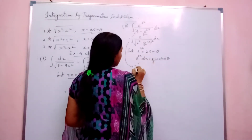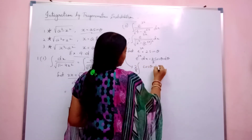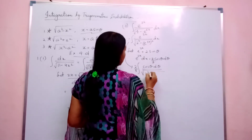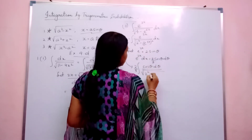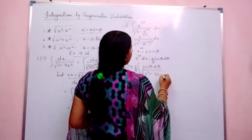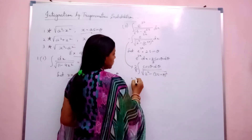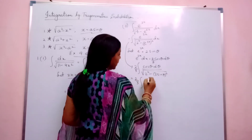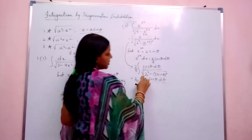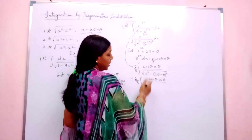Now your integration becomes: substitute e to the power 3x dx by the constant, take it outside in the numerator as cos theta d theta, divided by your denominator part — it is 2 squared minus e to the power 3x replaced by 2 sine theta whole squared. Now I can write it as 2 by 3, with cos theta d theta divided by 2 squared, with 2 common in both, in square form under root, take it outside.